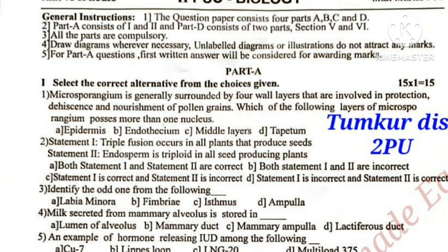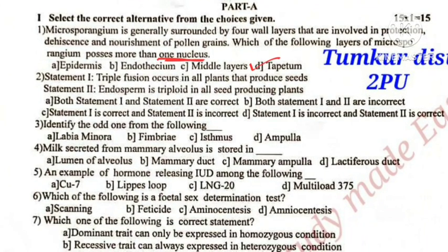This question is about which cell has more than one nucleus — that is tapetum. Next, triple fusion: endosperm is triploid in all seed-producing plants. According to my knowledge, both statement 1 and statement 2 are correct.